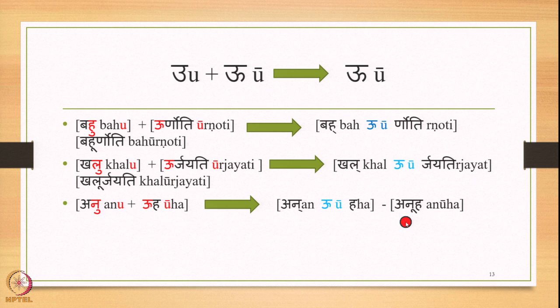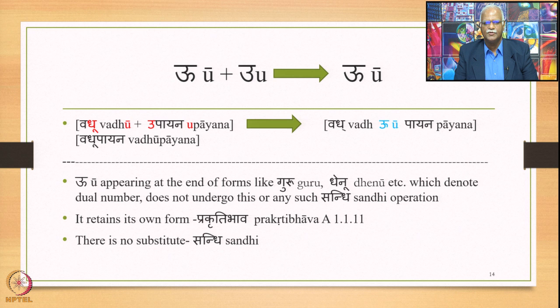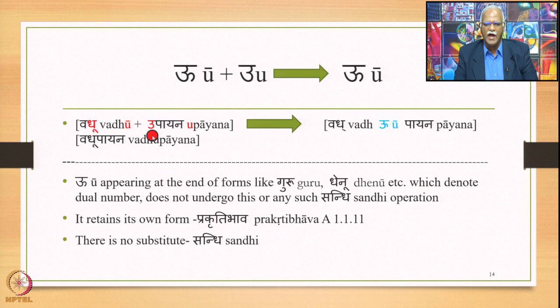The next template is long U followed by short U as input, and the output is long U. We have the compound Vadhu plus upayana. Vadhu has long U at the end followed by short U at the beginning of upayana. Since this is a samasa, Samhita is obligatory, and 6.1.101 applies and generates the output vadhu-u-paayana, giving the final output vadhupaayana.